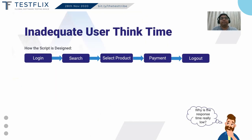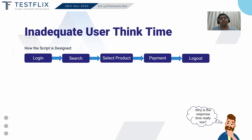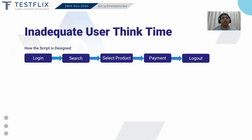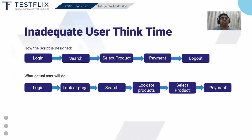The very first mistake is inadequate user think time. Generally, when we design our scripts — let's take an example of a script for an online shopping website — I created a script like: login, then search, then select a product, do the payment, and logout. When I run my script with a single user I'm getting very low response time, because all my transactions — login, search, select product, payment — are getting executed one by one sequentially.